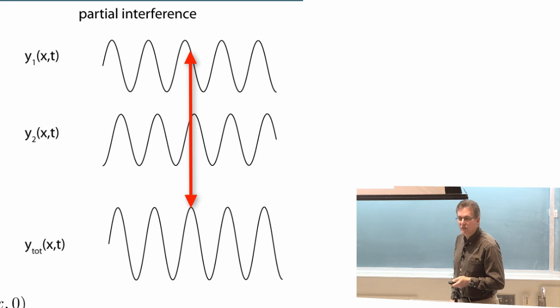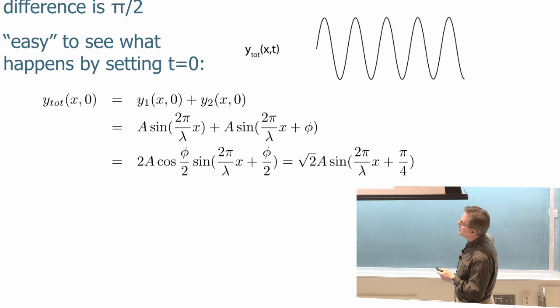Now we could write down mathematically what happens as follows. We'll just go to time t equals zero. What we've done here is take a snapshot. We can write that the total wave function y_total(x,0) is y1(x,0) plus y2(x,0). Now we'll just call this the first one, we'll say just has zero phase and the second one has some phase φ. So we can just write them as A sin(2πx/λ) plus A sin(2πx/λ + φ). We've just eliminated the t, the time terms, because we set t equals zero.